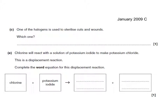One of the halogens is used to sterilise cuts and wounds — which one? From the specification, this is iodine. Chlorine will react with a solution of potassium iodide to make potassium chloride — this is a displacement reaction. Complete the word equation where one product is potassium chloride. Starting with chlorine and potassium iodide, chlorine swaps partners with the iodine and joins the potassium, leaving iodine on its own. Be careful with the endings: when the element is on its own, like iodine or chlorine, it ends in '-ine', whereas when it's in a compound, it ends in '-ide'.